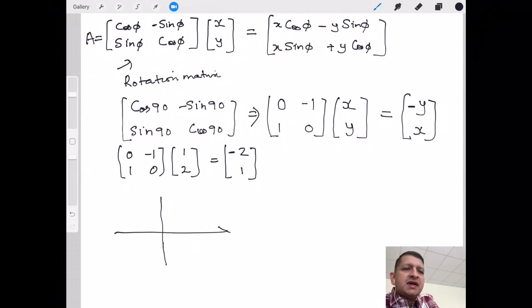I have the coordinate system, I have the x-axis and the y-axis. Now consider the point 1, 2. Let me erase the other point that is not required for us. So I have 1, 2.